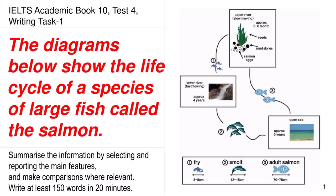Today we are going to discuss the IELTS Academic Book 10, Test 4, Writing Task 1. The diagrams below show the life cycle of a species of large fish called the salmon. Summarize the information by selecting and reporting the main features, make comparisons where relevant, and write at least 150 words in 20 minutes.